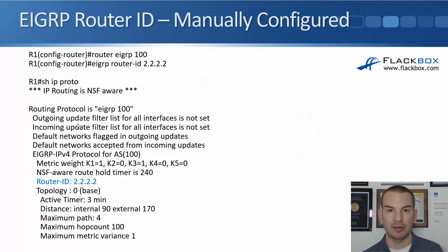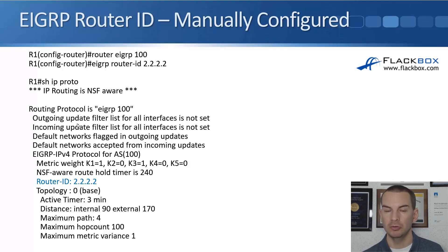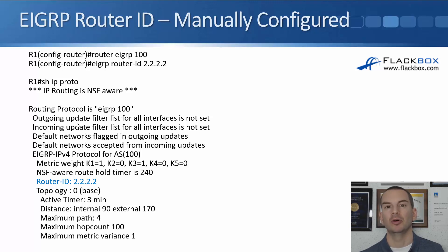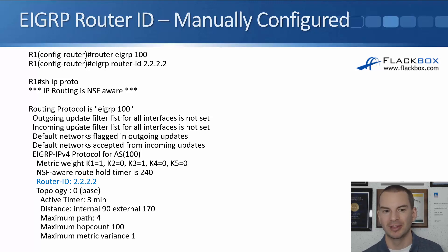To manually specify the router ID, use the command 'eigrp router-id' followed by the desired ID in IPv4 address format, entered under the EIGRP process. The router doesn't actually need to have that IP address configured — it's just a router ID that uses the format of an IP address. For example, you could set it to 2.2.2.2 even if that address isn't on the router. However, real-world best practice is to use an IP address that is actually configured on the router to avoid confusion.